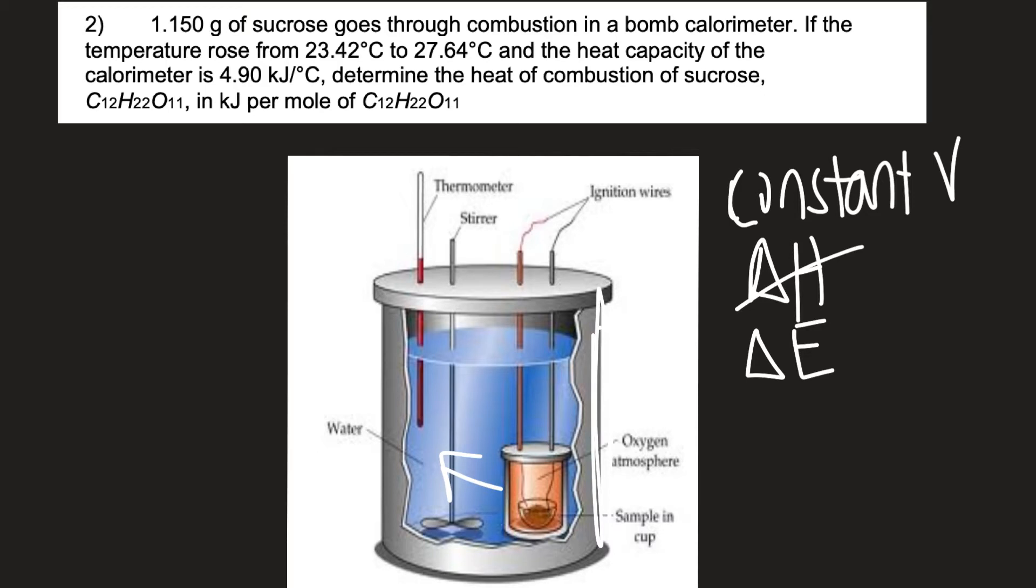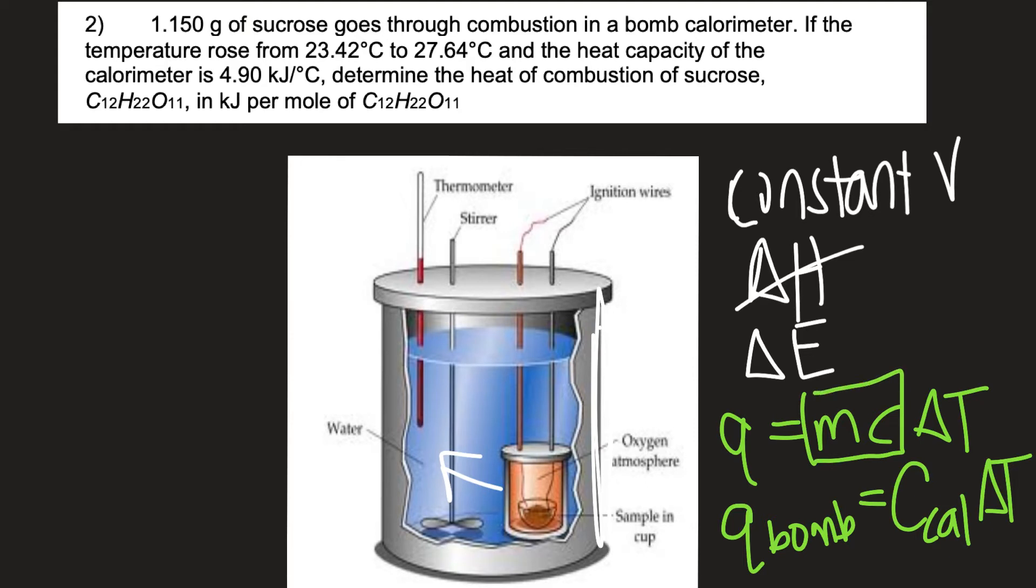The pertinent equation here is not going to be Q equals MC delta T. That's what you use for coffee cup calorimetry. Here you're going to use Q of the bomb, the entire calorimeter, is equal to C_cal times delta T and your C_cal is called the calorimeter constant. So that's basically like the mass of your water times not really specific heat but the combined almost specific heats of that entire surrounding bomb calorimeter. So you're not going to use this and instead you're going to use Q_bomb equals the calorimeter constant which is typically given to you times the change in temperature.